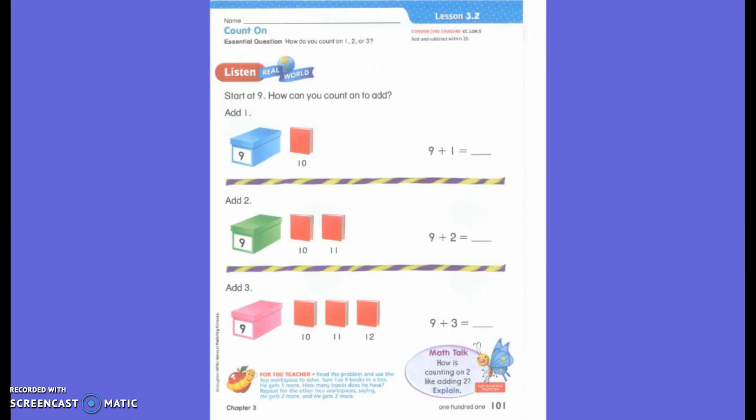We learned that if we have an addition sentence, if we know the answer to this addition sentence, then we should know the answer to this addition sentence. Why should we know the answer to this addition sentence if we know it to this addition sentence?